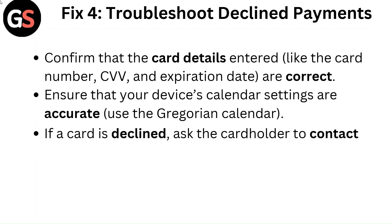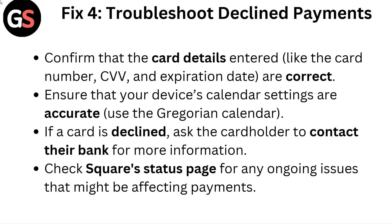Fix 4: Troubleshoot declined payments. Confirm that the card details entered — like the card number, CVV, and expiration date — are correct. Ensure that your device's calendar settings are accurate and use the Gregorian calendar. If a card is declined, ask the cardholder to contact their bank for more information. Check Square's status page for any ongoing issues that might be affecting payments.